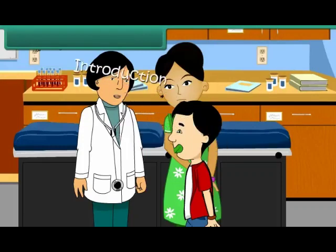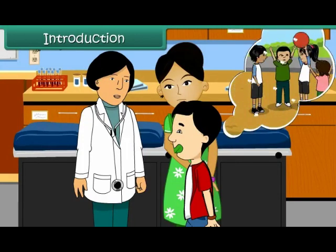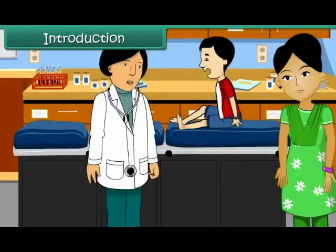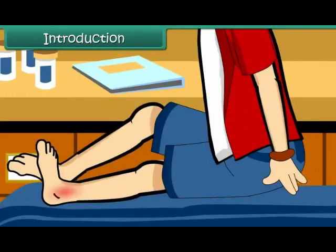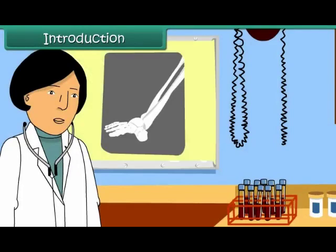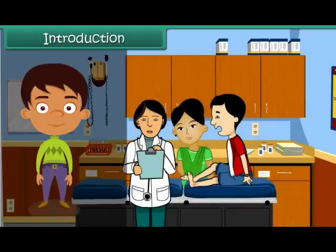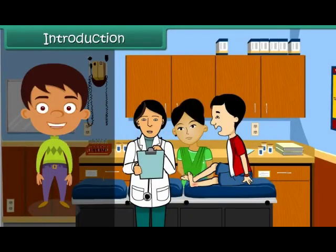Girish is at the hospital. While playing with his friends at school, he twisted his ankle. His ankle is swollen and he's in terrible pain; he's unable to move his feet. The doctor examines him and tells him that he has suffered a bone dislocation. She prescribes medicines and advises bed rest for four days. In this lesson, you will learn about the different organ systems of our body and their functions.